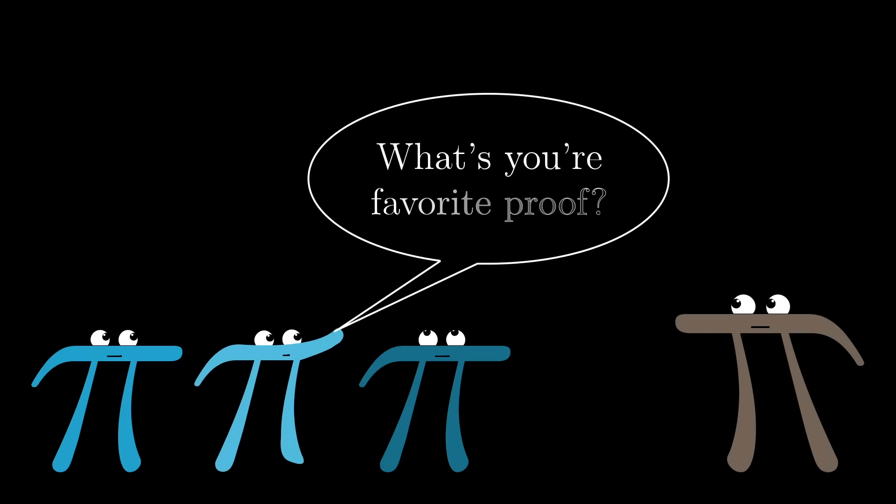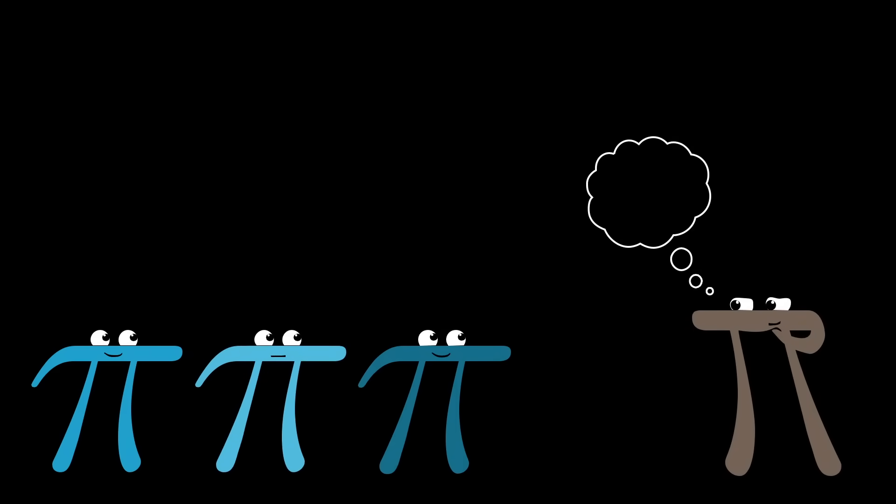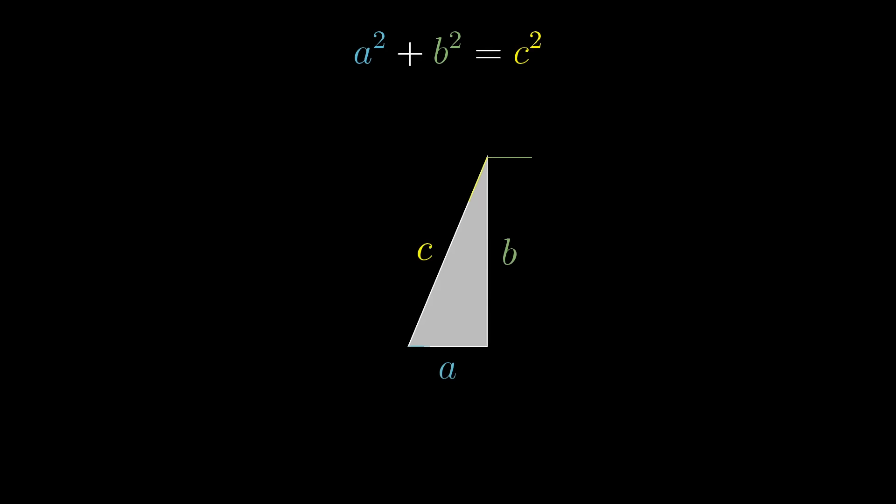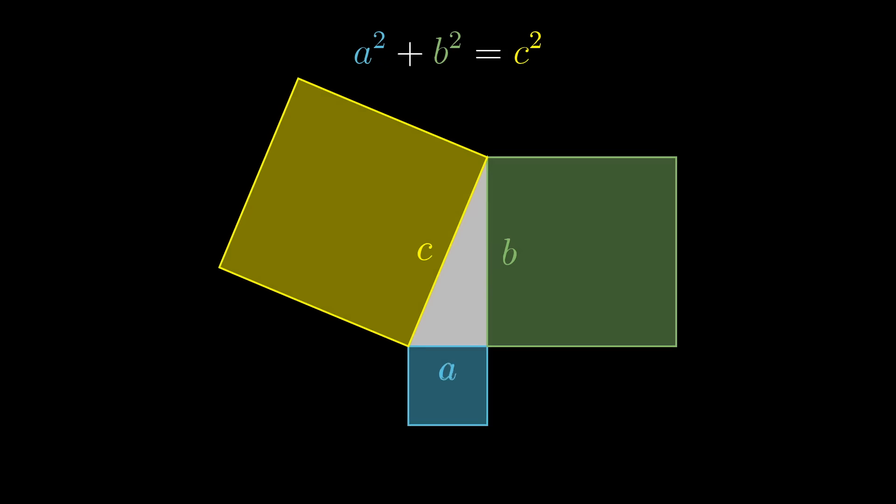And by the way, while we're talking about the Pythagorean Theorem, it would be a shame not to share my favorite proof for anyone who hasn't already seen this. You start off by drawing a square on each side of the triangle.